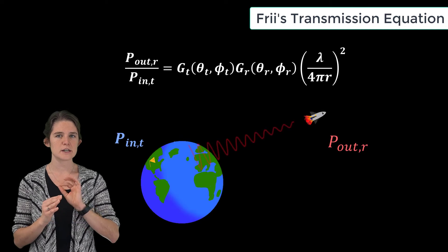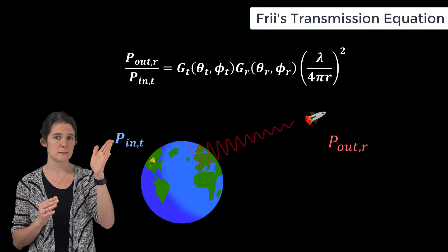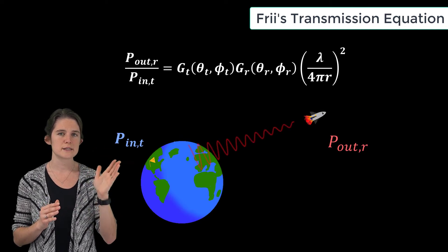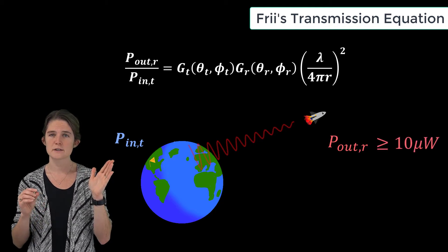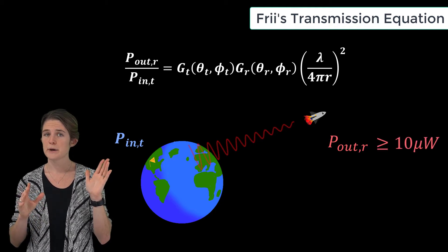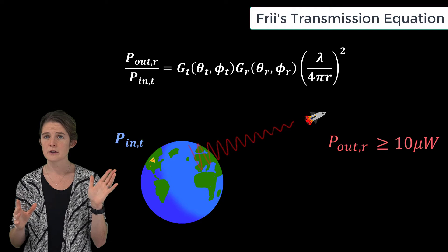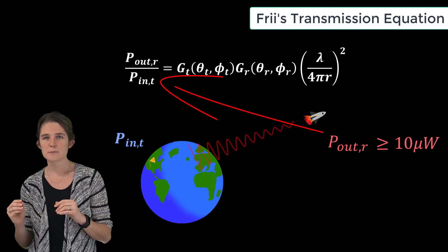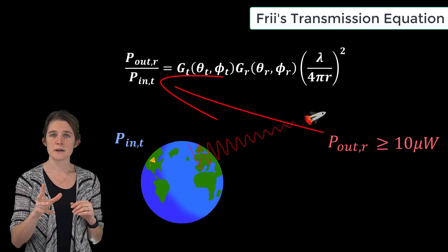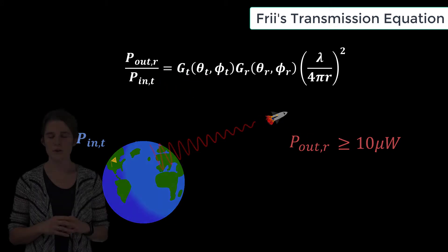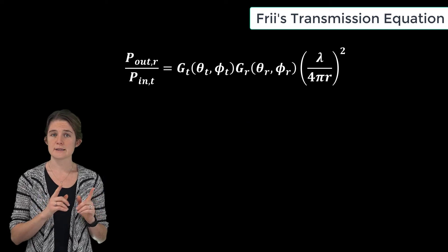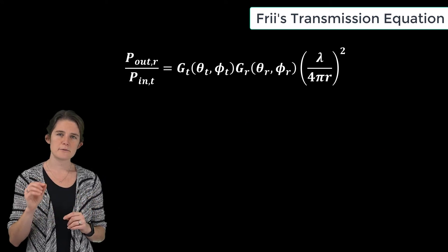As an example, if you're trying to transmit a signal to a satellite in space and you know that your receive system is capable of decoding a signal as small as 10 microwatts but no smaller, you can calculate the minimum power you will need to transmit in order to communicate with the satellite using the Friis transmission formula.